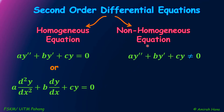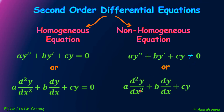Under non-homogeneous equation, we have A Y double prime plus B Y prime plus C Y not equals to 0, or A D²Y/DX² plus B DY/DX plus C Y not equals to 0. The difference between homogeneous and non-homogeneous equations is that in homogeneous equations, the right-hand side equals to 0, while in non-homogeneous equations, the right-hand side is not equals to 0.